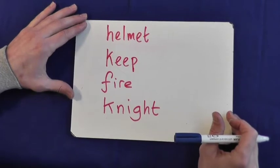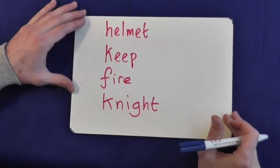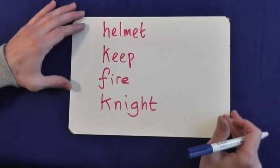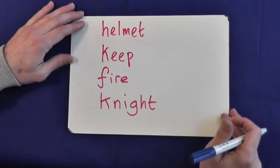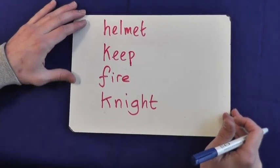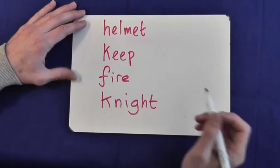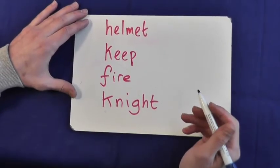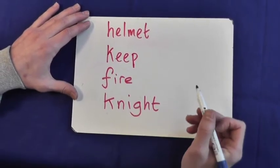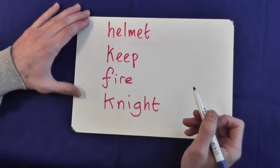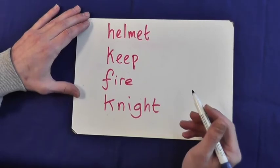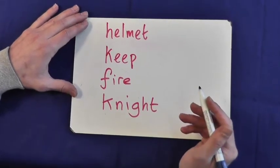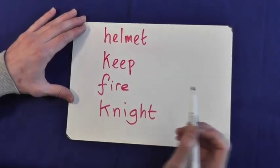We use sound buttons to help children segment and blend sounds within words to help them read and spell. We put a button under each sound. Some sounds are made with one letter, some are made with more than one letter.